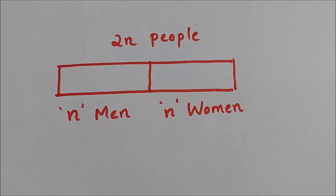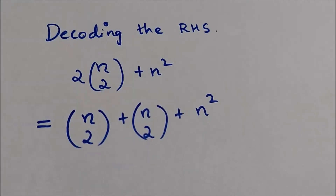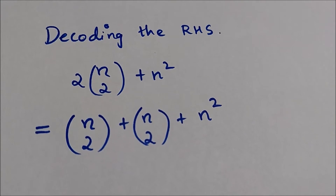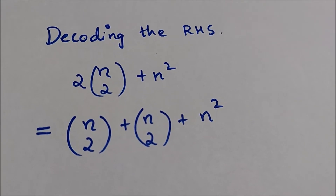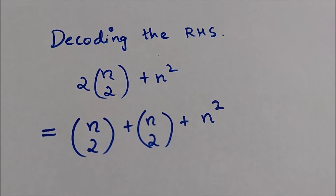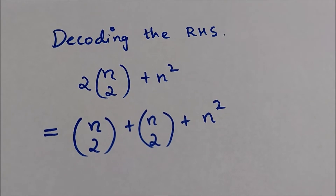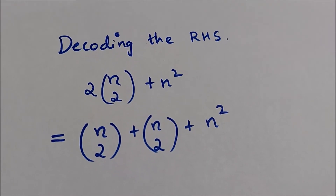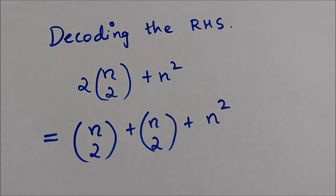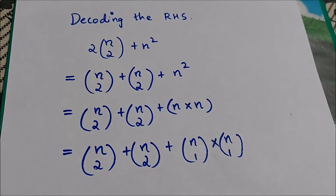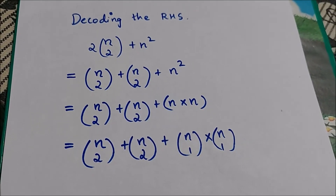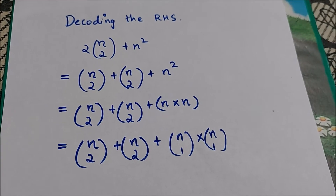Now let's try to decode the RHS. The RHS has 2·C(n, 2) plus n². Now 2·C(n, 2) can be written as C(n, 2) plus C(n, 2), and n² can be split into n times n. So the RHS becomes C(n, 2) plus C(n, 2) plus n·n.